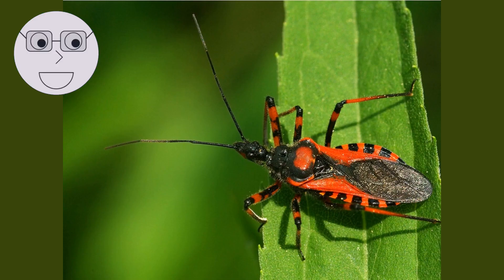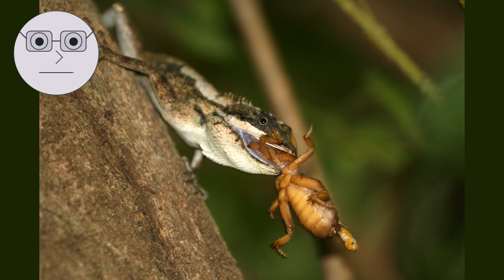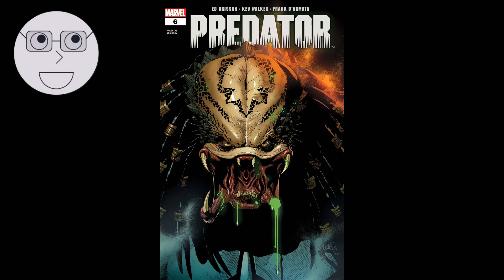Insects interact with other organisms in a variety of ways. Some insects are predators, hunting and eating other insects or small animals. A praying mantis catching a fly, a dragonfly catching a mosquito. Other insects are prey, serving as food for larger animals. A bird catching a grasshopper, a frog catching a fly.